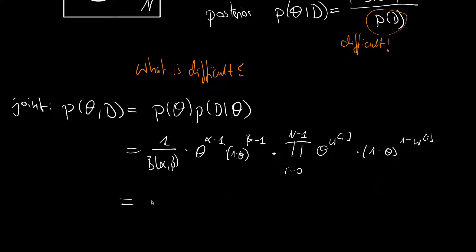Then we get 1 over the beta function of alpha and beta times theta to the alpha plus sum from i=0 to n-1 of w_i minus 1 times 1 minus theta to the beta plus n minus summation from i=0 to n-1 of w_i minus 1.